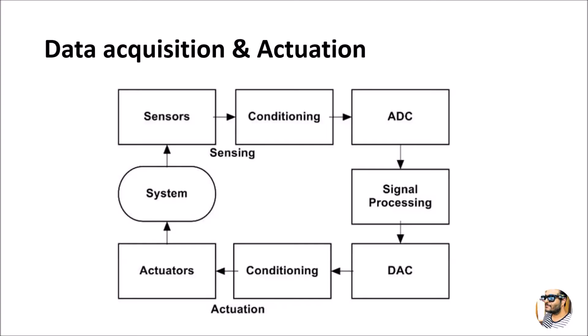After conditioning, the signal is given to the analog-to-digital converter. If we are getting an analog value, it should be converted into digital. Almost all sensors give analog values, and those analog values are converted into digital and sent to signal processing. Signal processing is then performed on the digital data.